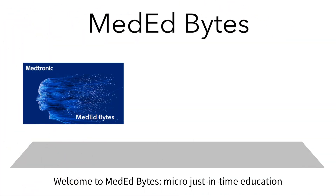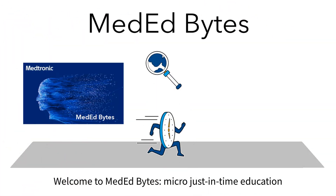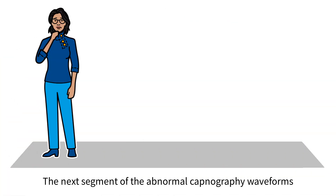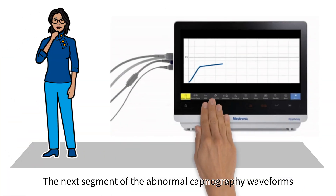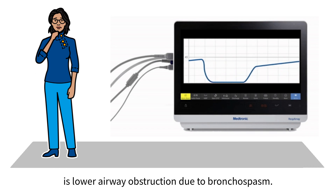Welcome to MedEd Byte's micro just-in-time education. The next segment of the abnormal capnography waveforms is lower airway obstruction due to bronchospasm.